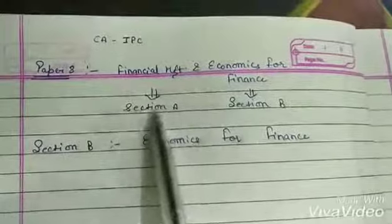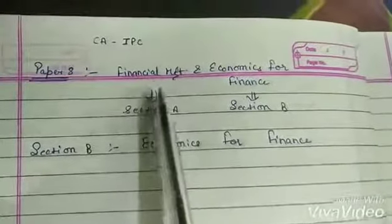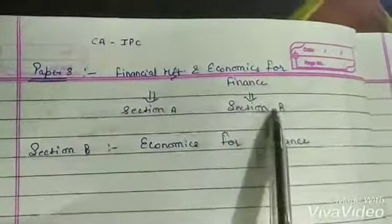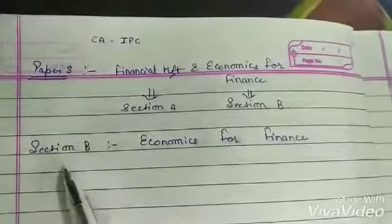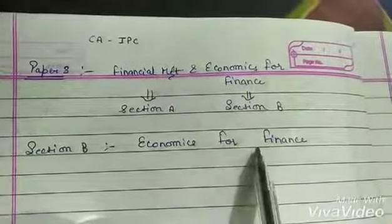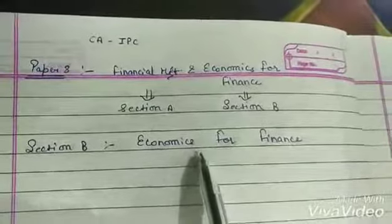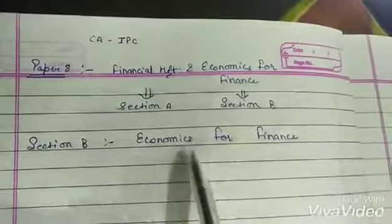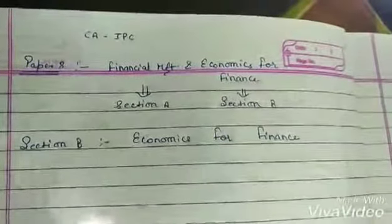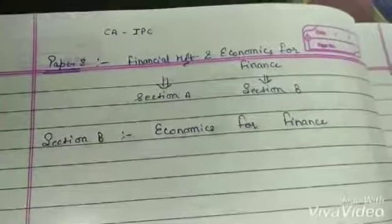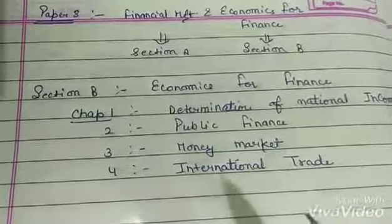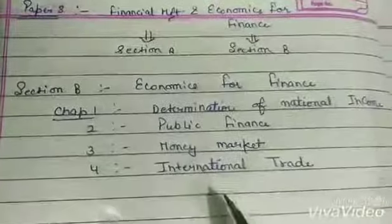Section A is Financial Management and Section B covers Economics for Finance. So Section B — Economics for Finance — is the subject we are going to cover. And it's not much work; it's very small — it's only 4 chapters.